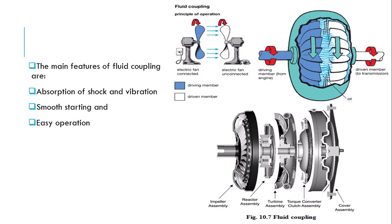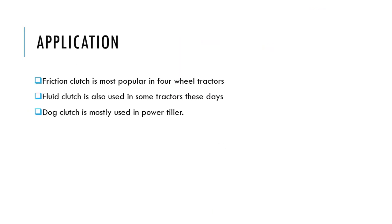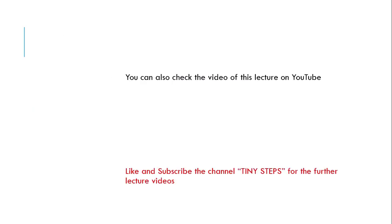Applications: friction clutches are most popular in four-wheel tractors. Fluid clutches are also used in some tractors these days, but they are used for garden tractors or small, short, lighter applications. Dog clutches are used for power tillers to carry out higher loads. Please subscribe to this channel, share these videos with your friends so that someone can benefit. Thank you and take care.